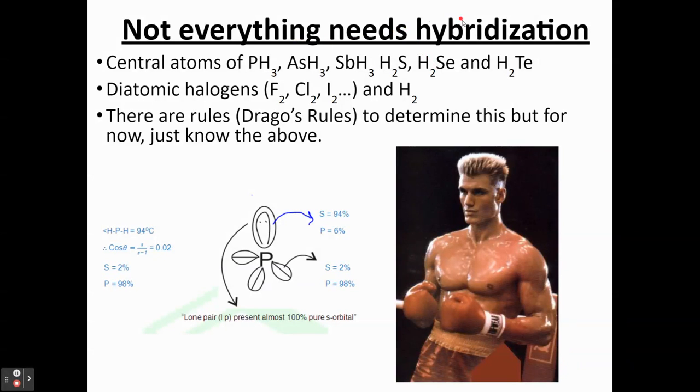Not everything actually needs hybridization to explain bonding. These are some examples here. So central atoms of these molecules don't really need hybridization. Technically, you don't really need to show hybridization for diatomic halogens or other diatomic molecules like H2.